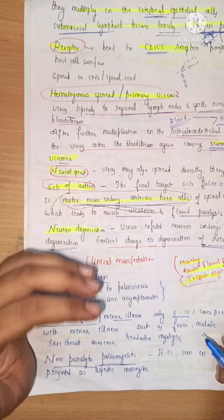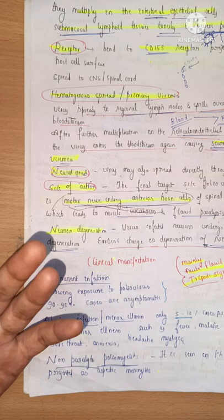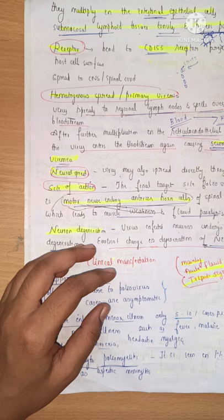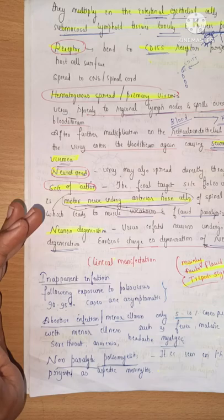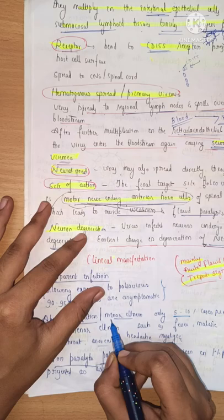In five to ten percent of cases, the child may present with minor illness such as fever, malaise, sore throat, anorexia (loss of appetite), and myalgia (muscle ache). This may be present in a child whose immunity is not strong enough or who has not taken any vaccine.